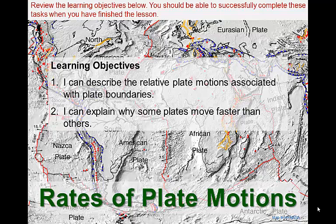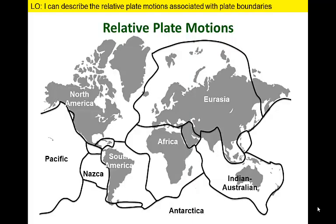Here is a world map with the major plate boundaries indicated. Could you draw arrows on this map to illustrate the relative motion directions associated with these plate boundaries? We will start you off with a few examples. Can you add some more arrows? We can use our knowledge of plate boundaries to constrain the plate motions. Can you identify where different types of plate boundaries are present — for example, convergent, divergent, or transform boundaries?